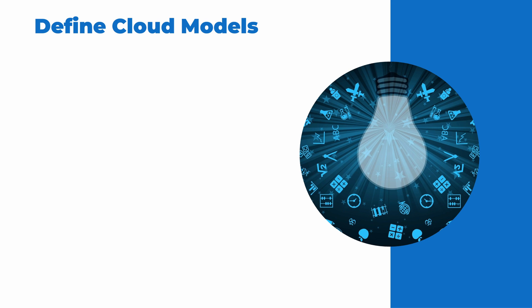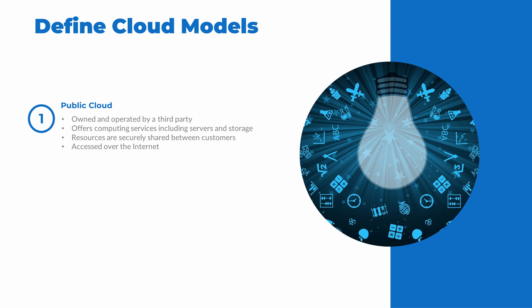Not all clouds are created equally. Microsoft defines three different types of cloud computing. The first is public cloud — a public cloud is owned and operated by a third party such as Microsoft with Azure. Public clouds offer a variety of services such as servers and storage. The resources in a public cloud are securely shared between customers; a virtual server, for example, may exist on the same physical hardware as other customers. Steps to secure customer resources and manage capacity are the responsibility of the cloud provider, and services are accessed over the internet.